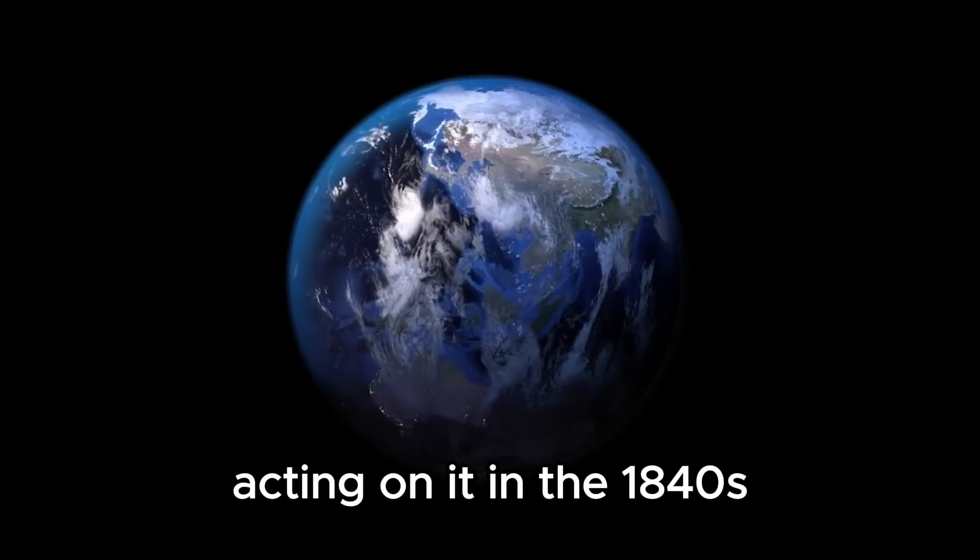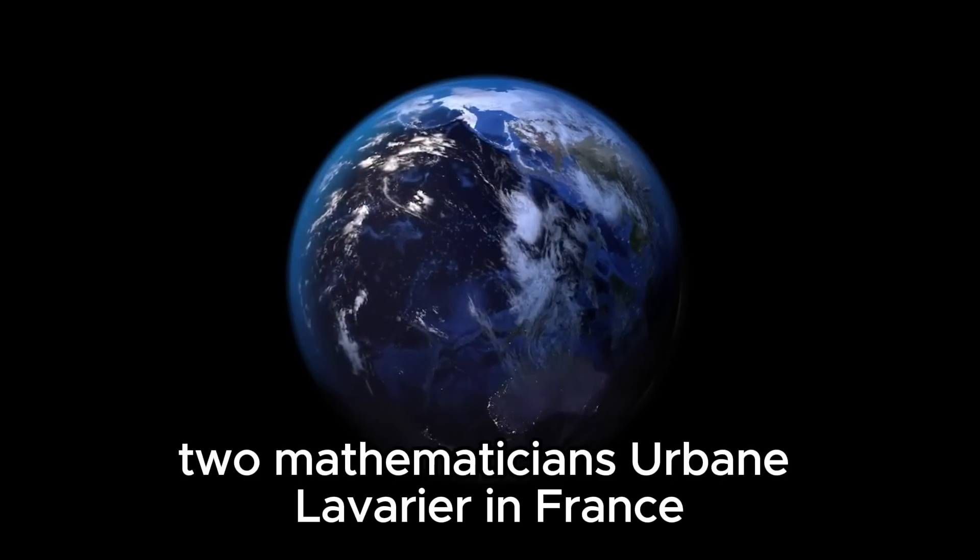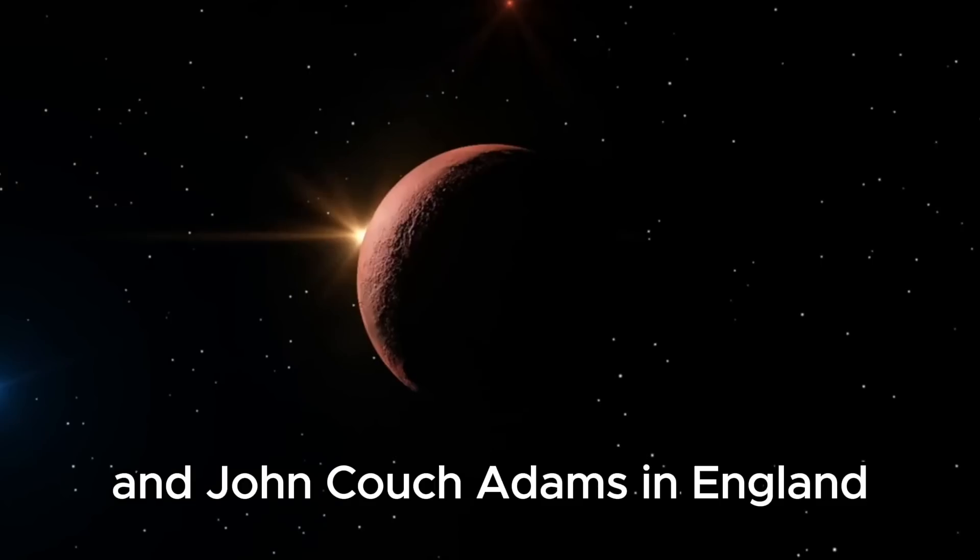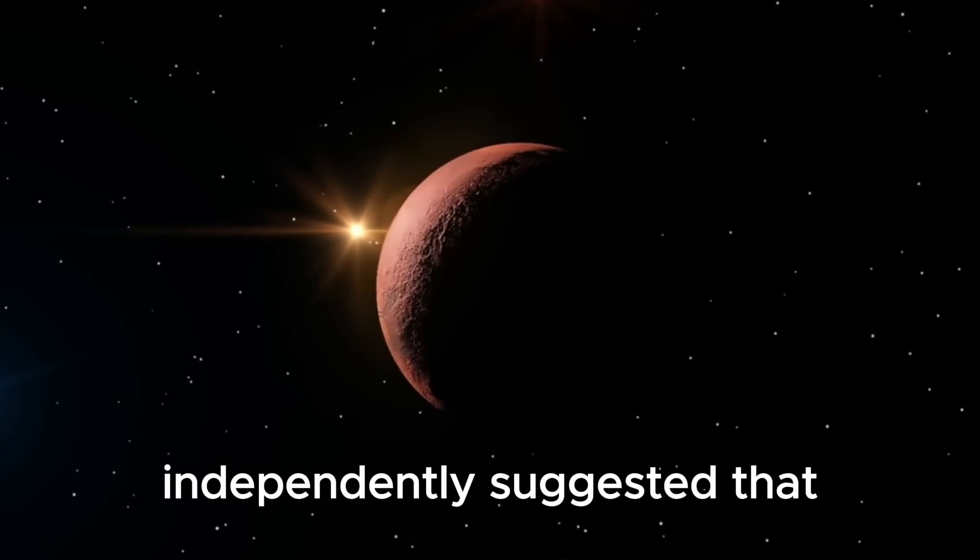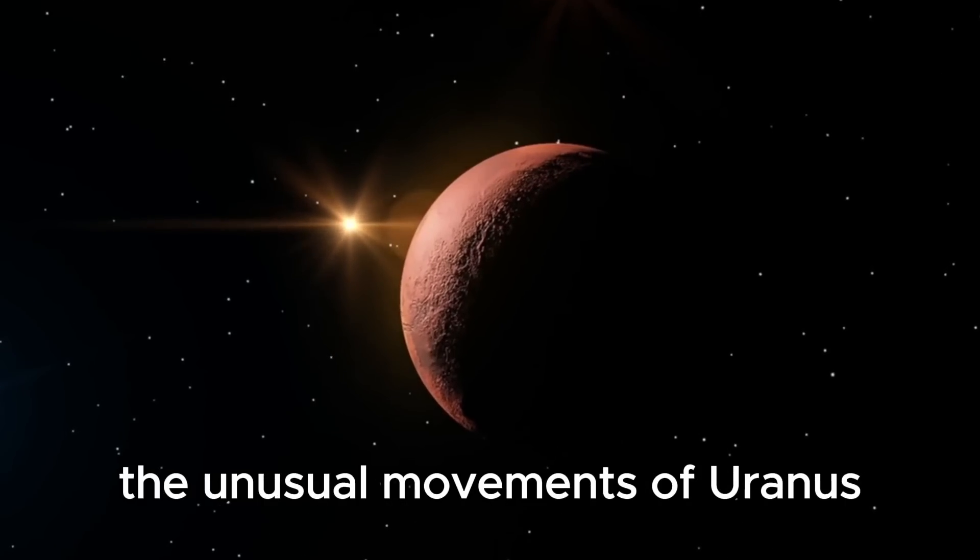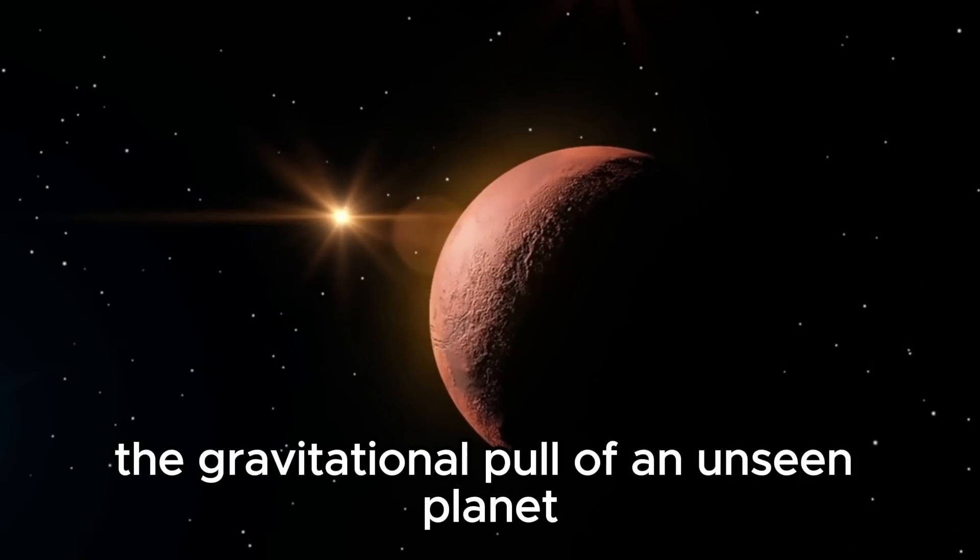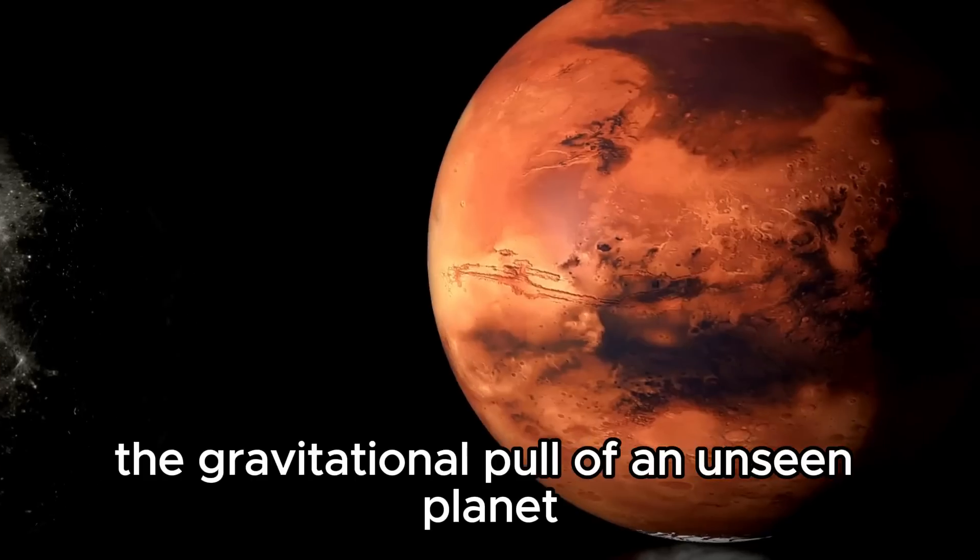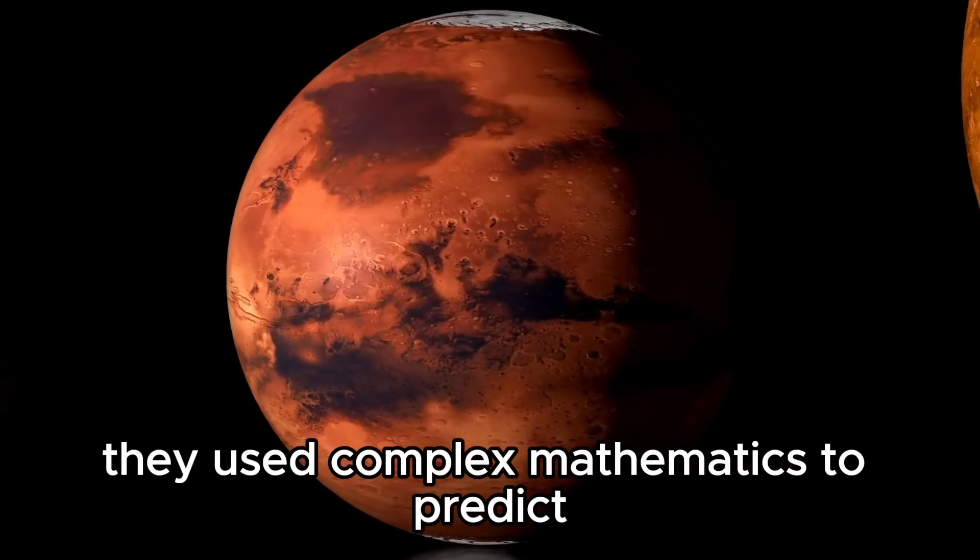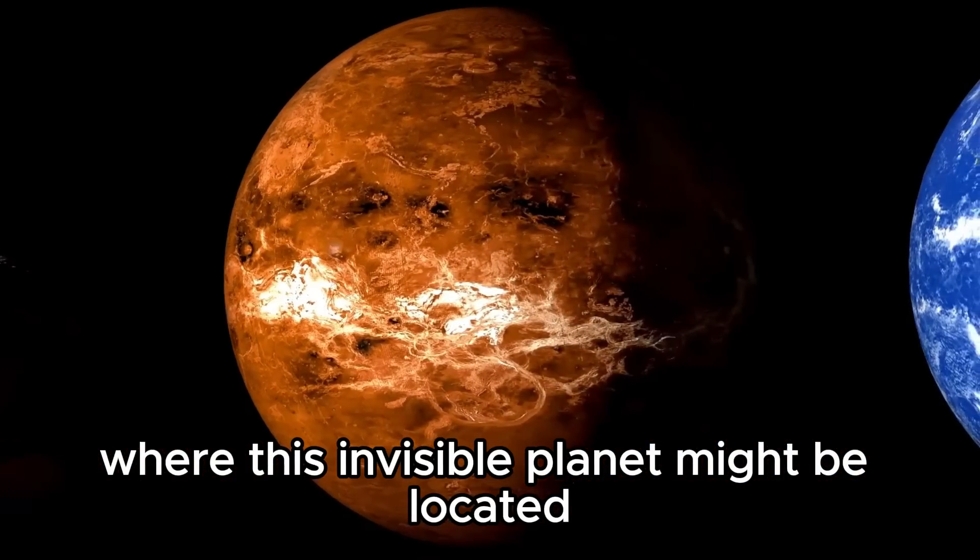In the 1840s, two mathematicians, Urbain Le Verrier in France and John Couch Adams in England, independently suggested that the unusual movements of Uranus could be caused by the gravitational pull of an unseen planet. They used complex mathematics to predict where this invisible planet might be located.